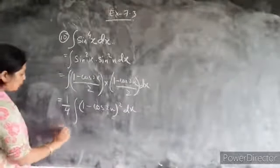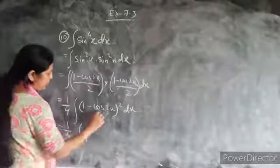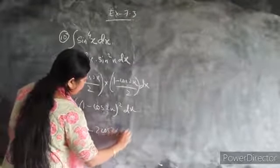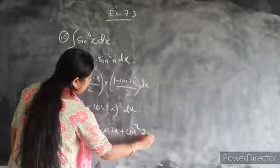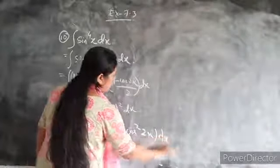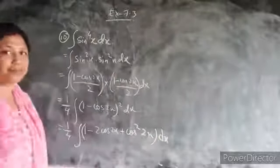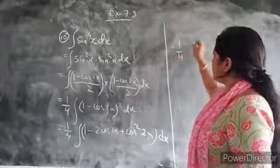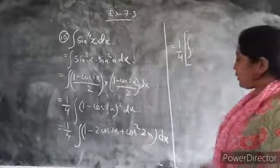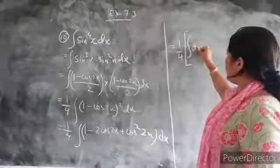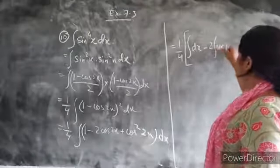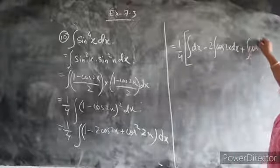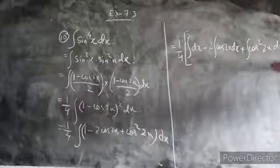So here what we are doing is expanding using the identity (a minus b)² equals a² minus 2ab plus b². Separating the integral: integration of dx minus 2 times integration of cos2x dx plus integration of cos²2x dx.